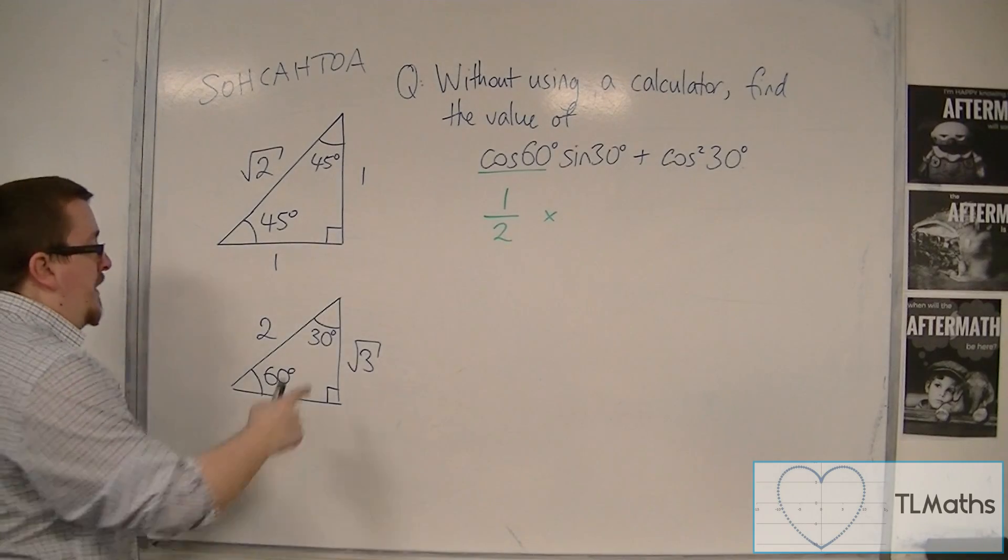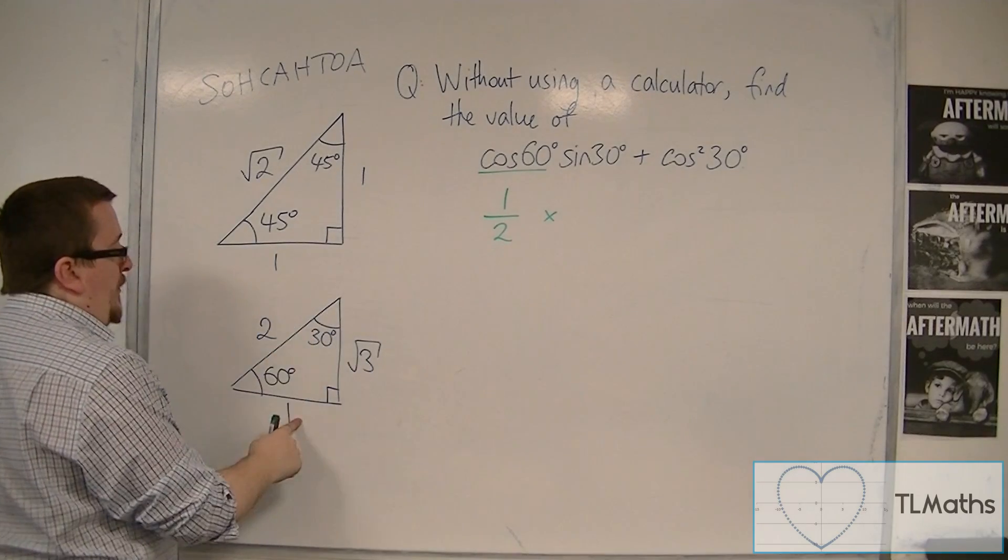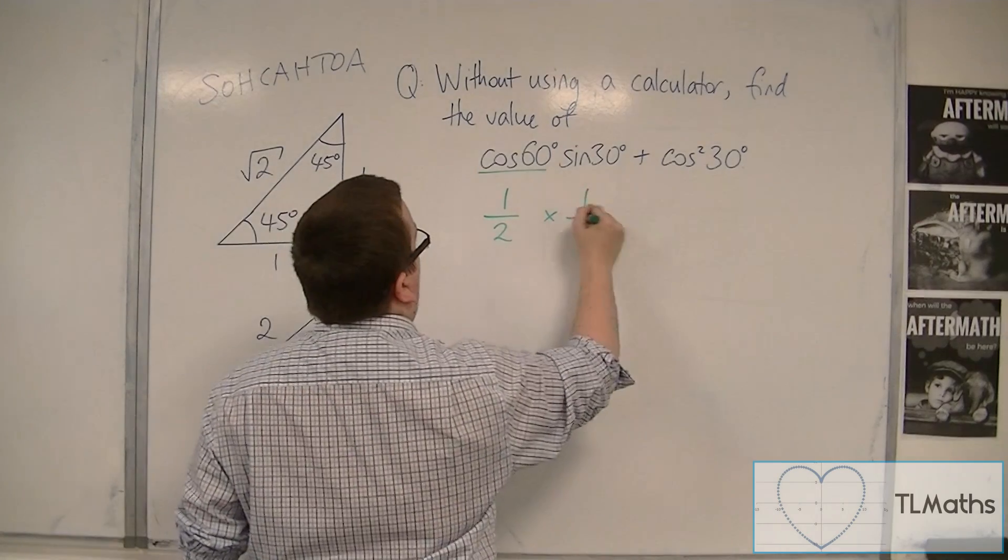Sine of 30, well there's the 30, opposite over hypotenuse, so that's also one half.